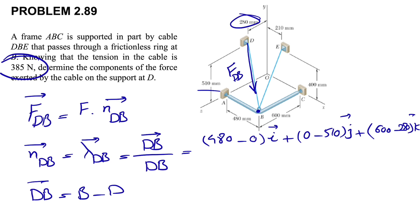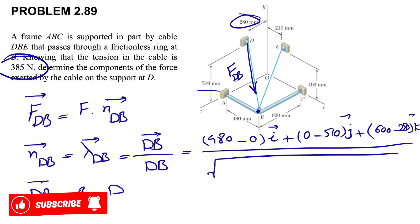For the z component of B we see we're on the positive side of z at 600. Looking at the z component of D we have 280.